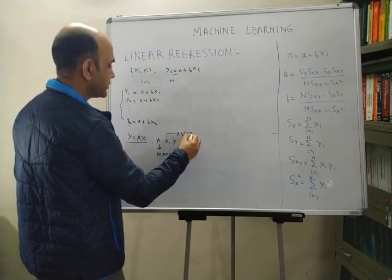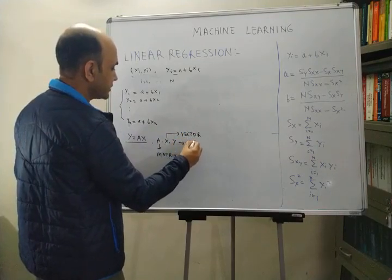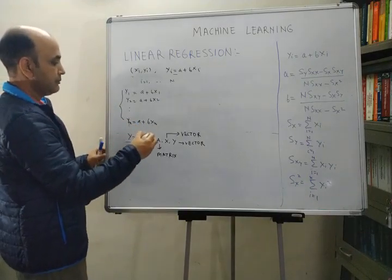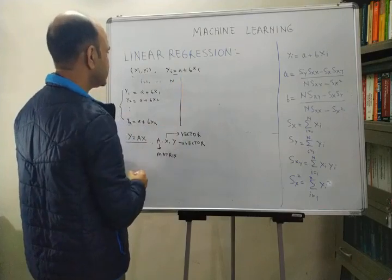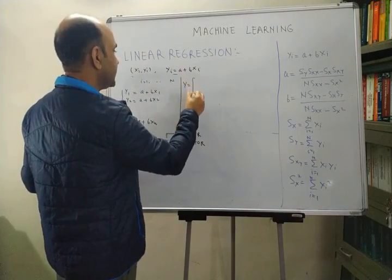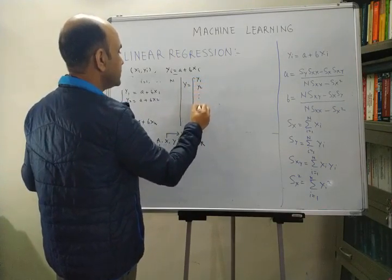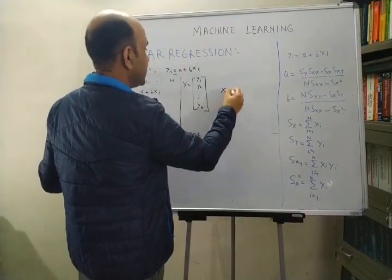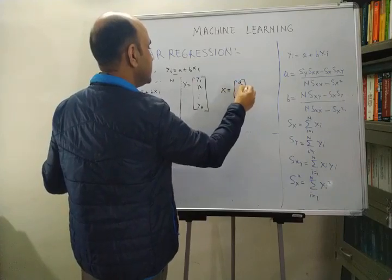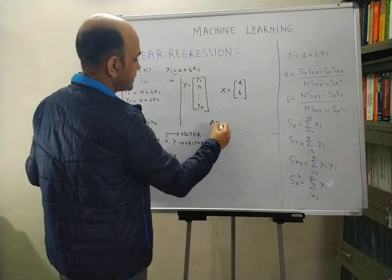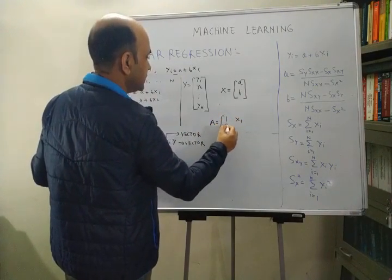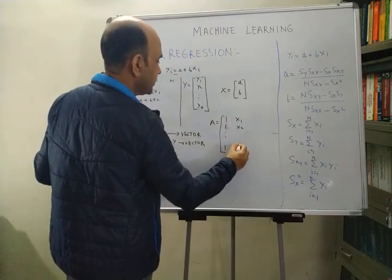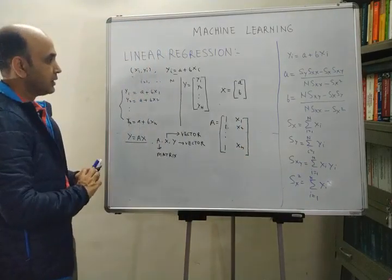Now I will write explicitly what are the values of these matrices. We can see that it is straightforward: the Y matrix will be [y_1, y_2, ..., y_n], the X matrix is [a, b], and the A matrix is [[1, x_1], [1, x_2], ..., [1, x_n]].